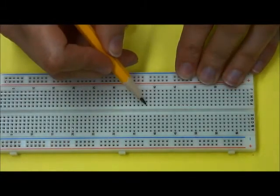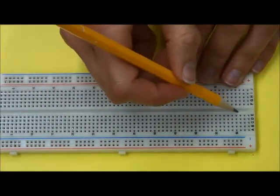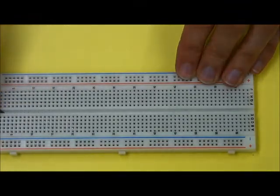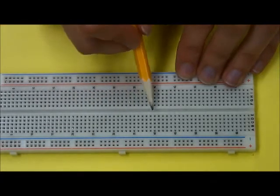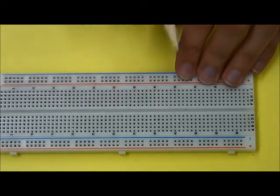And then the same thing happens down here at the bottom. But along the middle, this is called the bridge, there's no connection. This middle section people often use to place microchips so that you can keep legs on one side and the other side separate.